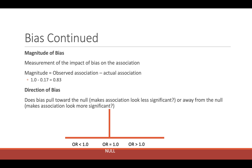We ask: does the bias pull toward the null, making the association look less significant, or away from the null, making it look more significant? In this case, our observed odds ratio is 1 and our actual is 0.17. The observed is pulling us toward the null, making the association look less significant. This concludes this video; the second video will start with cohort studies.